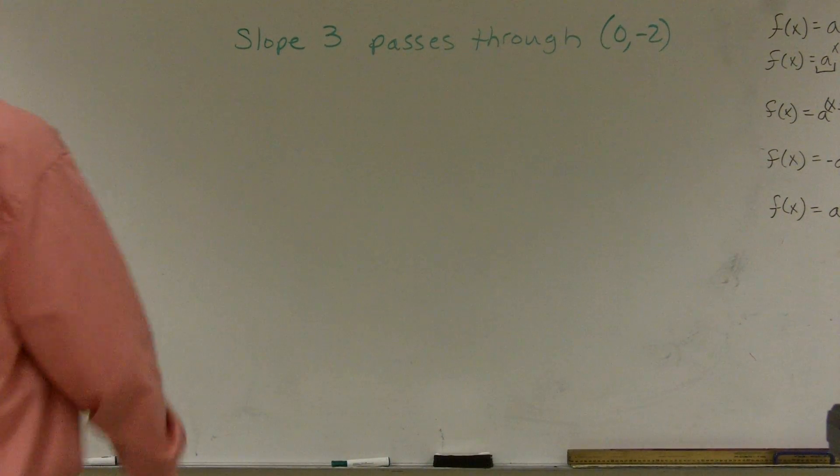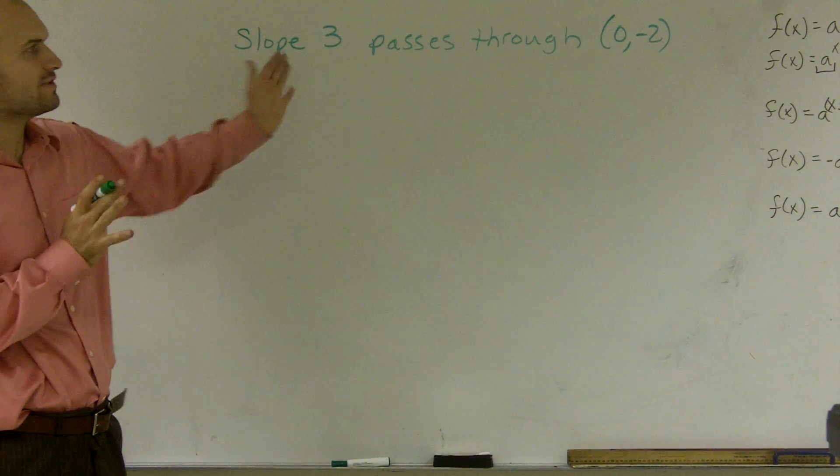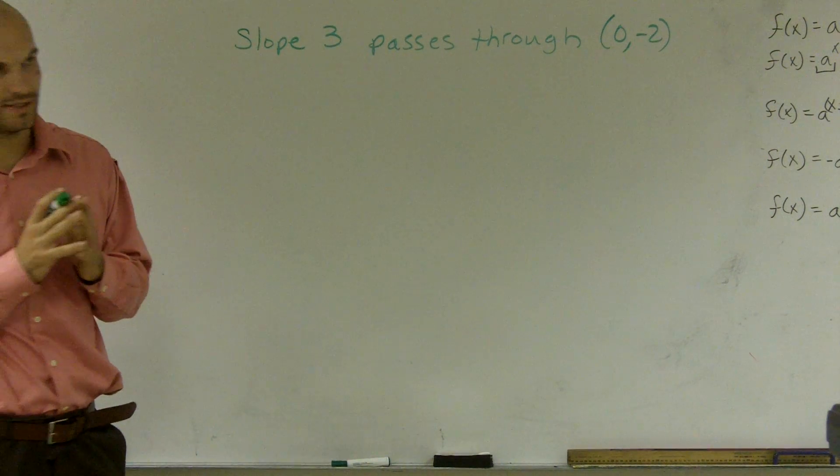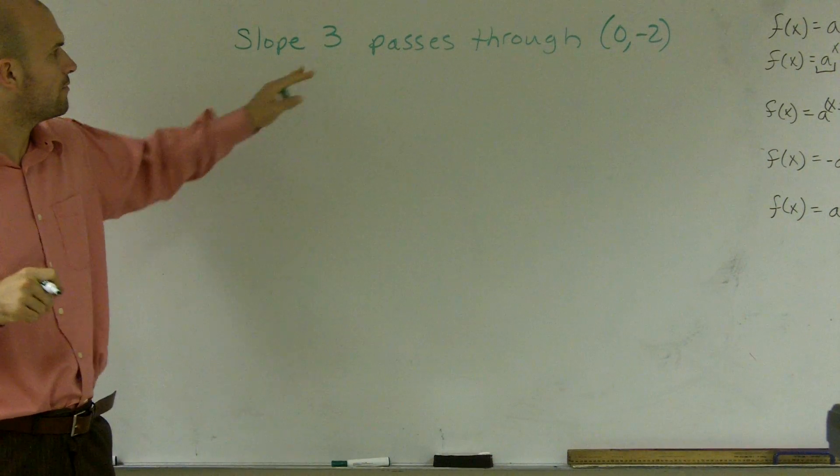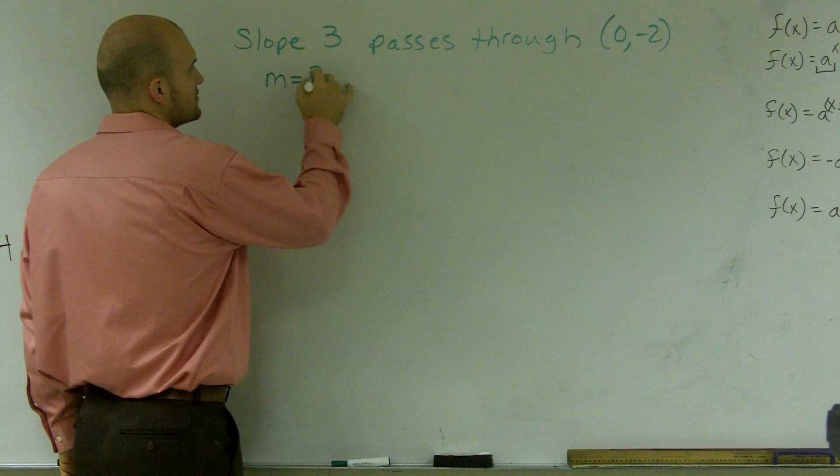All right. So what I'd like to do is show you how to find an equation of a line given the slope and when it passes through a point. So we're going to say m is going to be our slope, which is going to be 3.